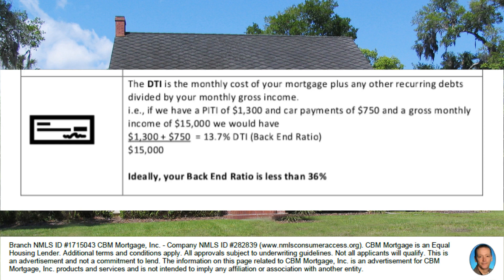Finally, the DTI, or debt-to-income ratio, is the monthly cost of your mortgage plus any other recurring debts divided by your monthly gross income. So if we had a PITI of $1,300, a car payment of $750, and a gross monthly income of $15,000, we'd have $1,300 plus $750 divided by $15,000, which gives us a DTI of 13.7% — the back-end ratio. Ideally your back-end ratio is less than 36%.